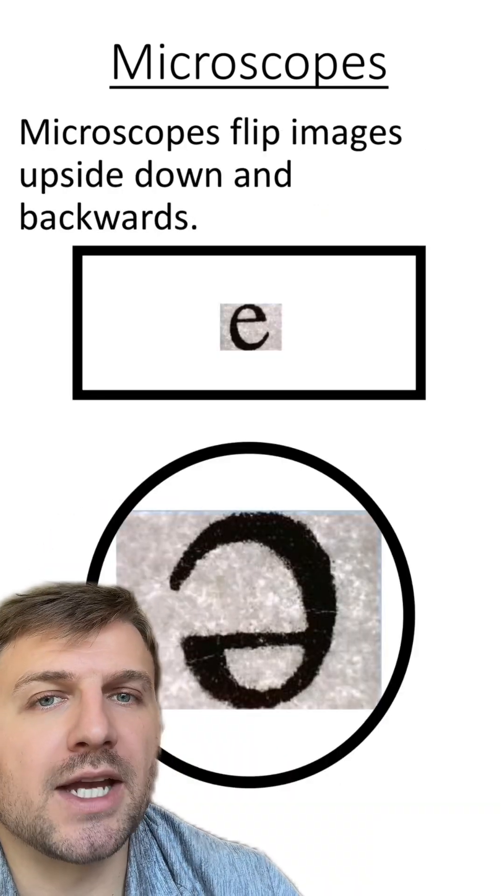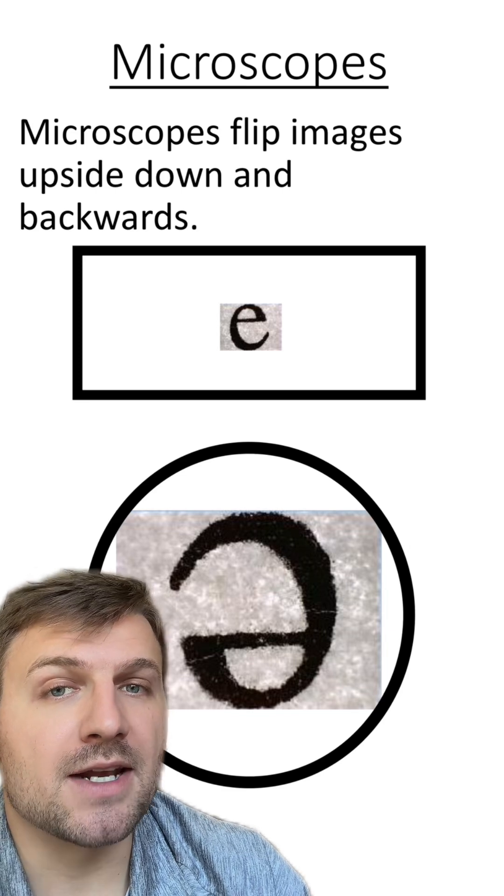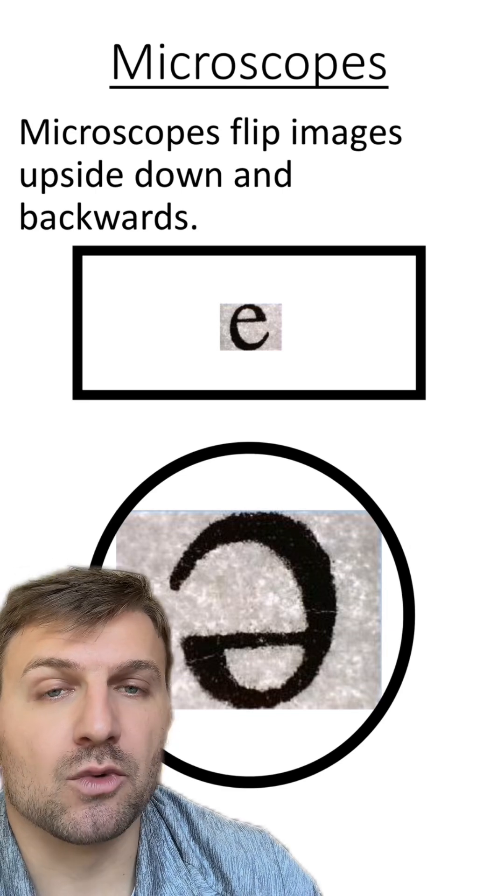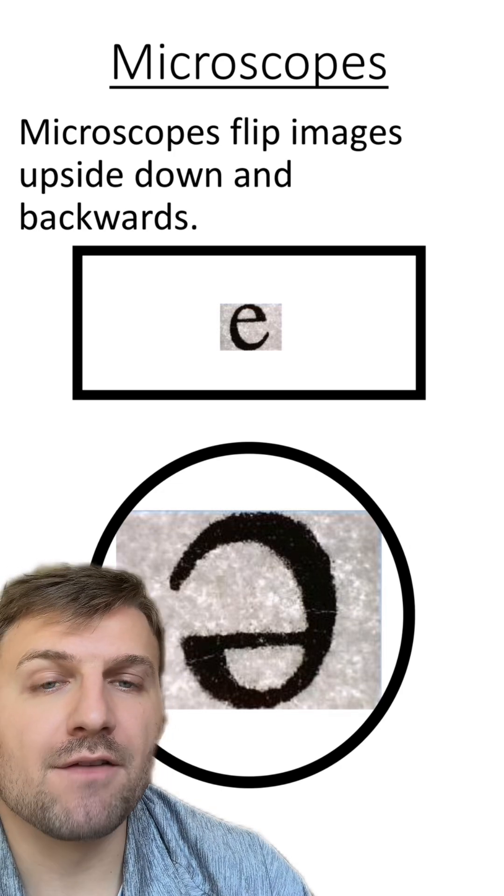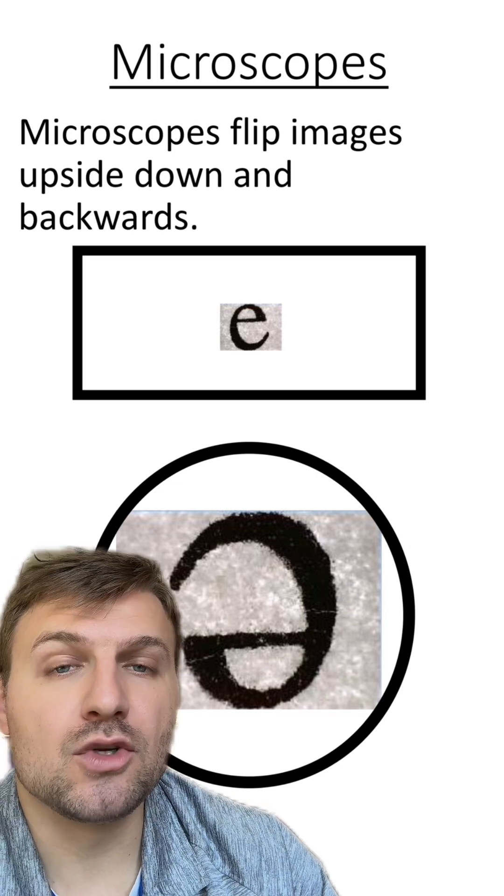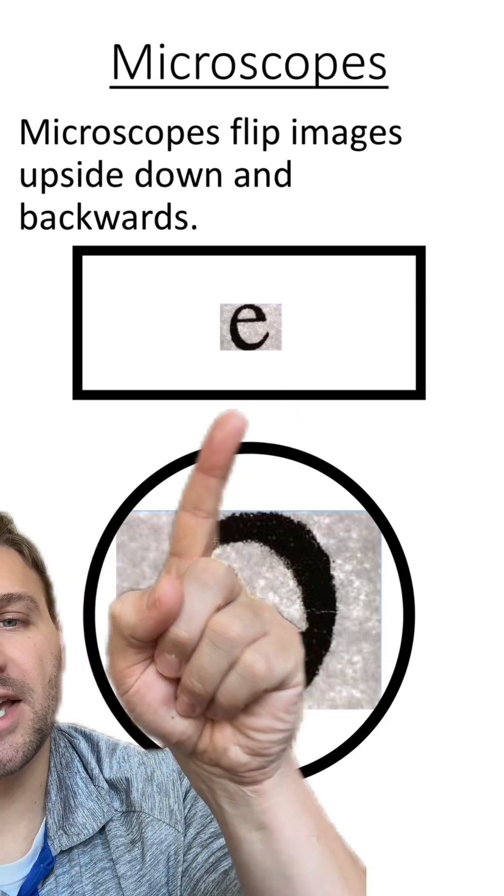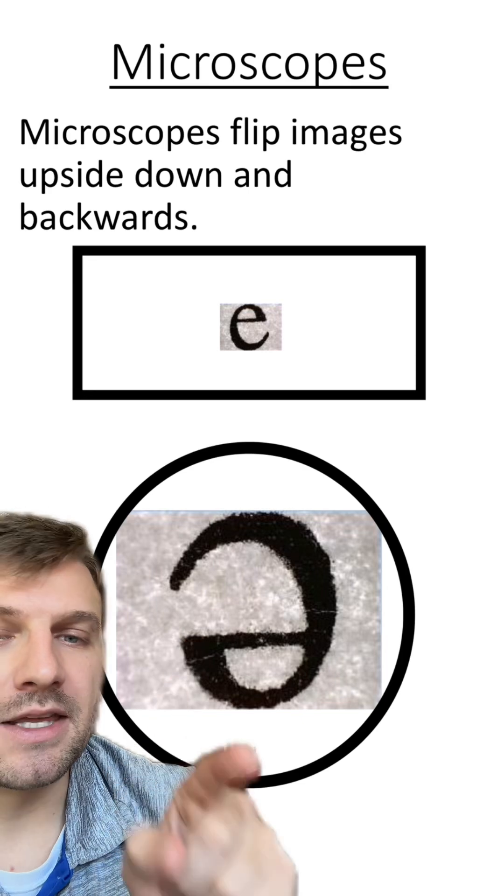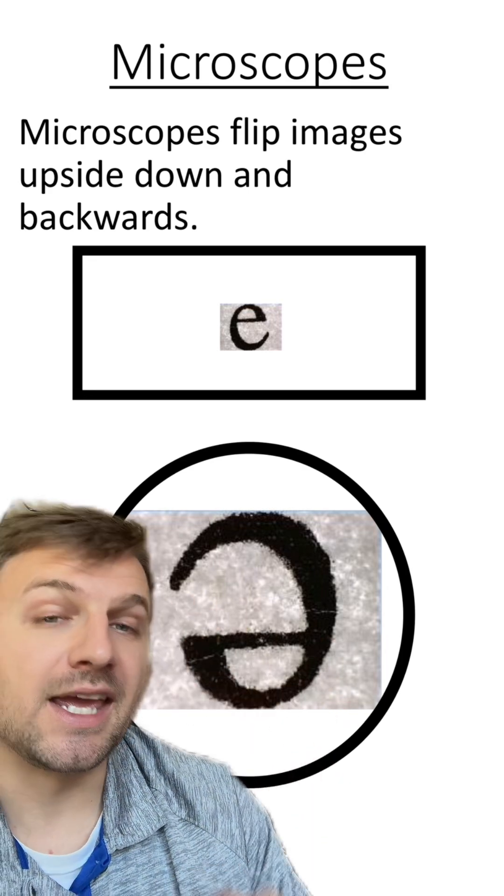Now, something that you might notice about your microscope slides is that they are upside down and backwards in the actual microscope. This is because of the mirrors that are being used to magnify the image. So, again, you can see this is what it looks like in real life. You can read the E, but in the microscope, it is upside down and backwards.